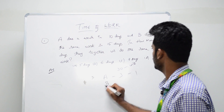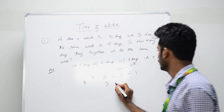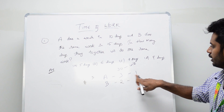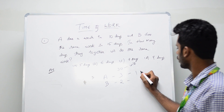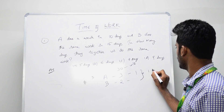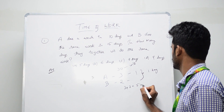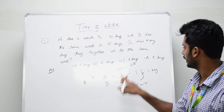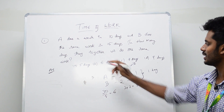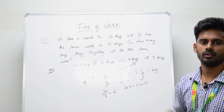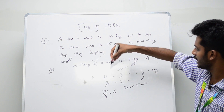B completes the work in 15 days, and 30 divided by 15 is 2, so B does 2 units per day. Together in one day they do 3 plus 2 which is 5 units. For 30 total units, 30 divided by 5 equals 6. So the answer is 6 days. Whenever you see this kind of question, take the LCM first, then find individual daily portions.